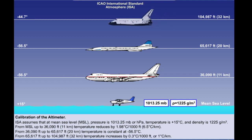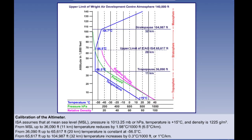And finally, from 65,617 feet or 20 kilometres up to 104,987 feet or 32 kilometres, temperature increases by 0.3 degrees Celsius per thousand feet or 1 degree Celsius per kilometre. On the basis of these assumptions, the pressure which corresponds to any given altitude in the ISA can be calculated and under laboratory conditions, any altimeter readout can be checked against the ISA calculated figures. Any discrepancies within accepted limits can be listed as instrument error over the operating range of the altimeter and recorded on a correction table.